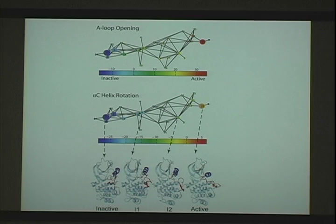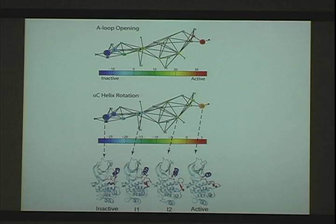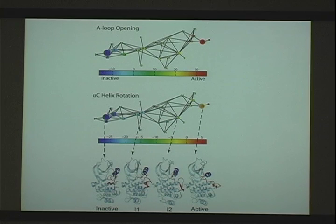Red means the loop is as open as possible. It's interesting that as soon as you leave the dark blue inactive state, right at this intermediate you're already in the green, meaning you're getting towards a more open loop rather quickly. The red is only at the very last — so you open pretty fast. On the other hand, for the helix rotation parameter: you leave the inactive state and you're still kind of cyan — still blue — which means the helix is trailing behind. So the loop opens faster than the helix rotates, which is also what people see in targeted dynamics.